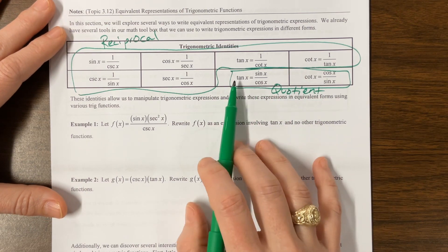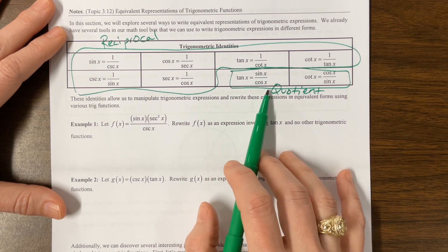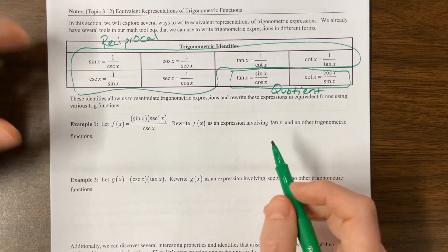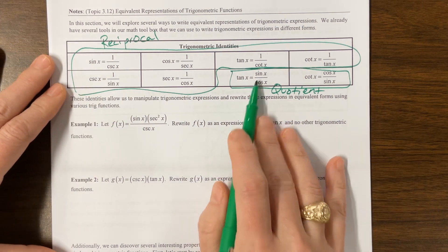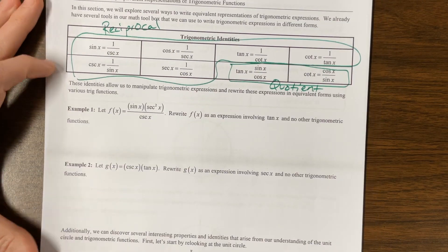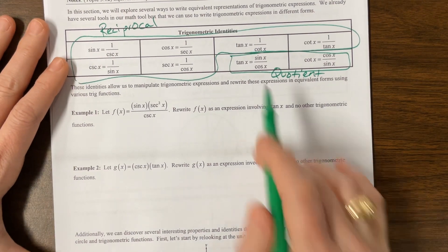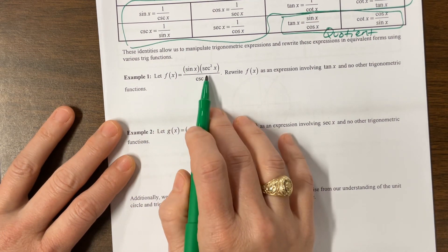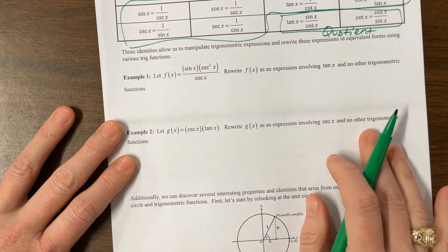Notice I wasn't saying tangent of x equals sine of x over cosine of x. But if you ever write it without the variable, it has no meaning. So I'm saying it a little shorter than what we would actually write. I took off points just today on somebody's retest because they left off variables. Okay, so then they want us to take this expression right here and rewrite it using tangent and no other trig functions.